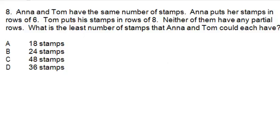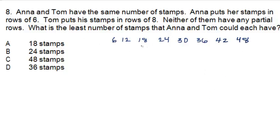If Anna is able to put her stamps in rows of 6, that means she has either 6 stamps, 12 stamps, 18, 24, 30, 36, 42, or 48. Anna can have any of these amounts of stamps and put them in rows of 6 evenly without having any stamps left over.